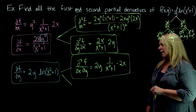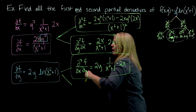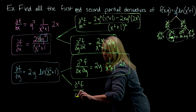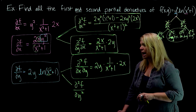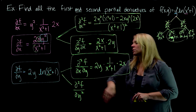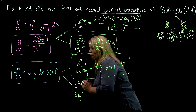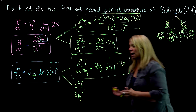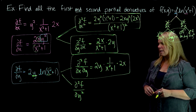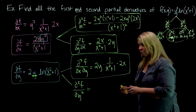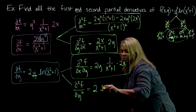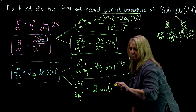Now I need the pure second partial with respect to y — differentiating ∂f/∂y with respect to y again. That's ∂/∂y of ∂f/∂y. I identify where y is: only in the y² term. When I differentiate 2y·ln(x²+1) with respect to y, the ln(x²+1) factor is held constant, so the result is just 2·ln(x²+1).